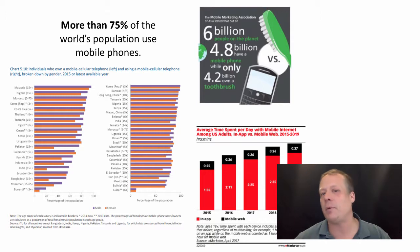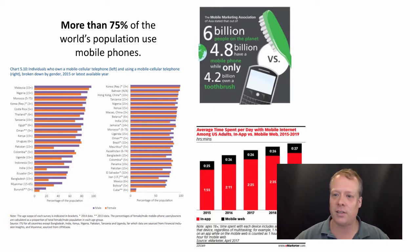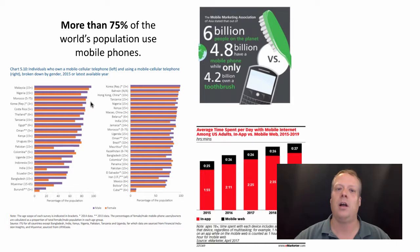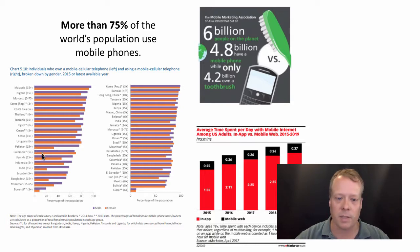More than 75% of the world's population uses mobile phones. In fact, the Mobile Marketing Association of Asia has stated that there are 6 billion people on the planet, 4.8 billion have a mobile phone, while only 4.2 billion have a toothbrush. So there are more mobile phones than toothbrushes on the planet. You can see that a large percentage of the population actually owns mobile phones, even in developing countries — from Malaysia at almost 100% usage, down to the lowest levels around 40 to 50%.